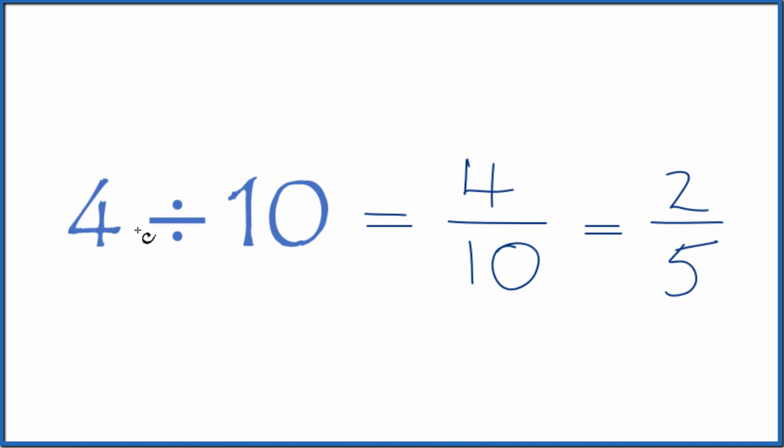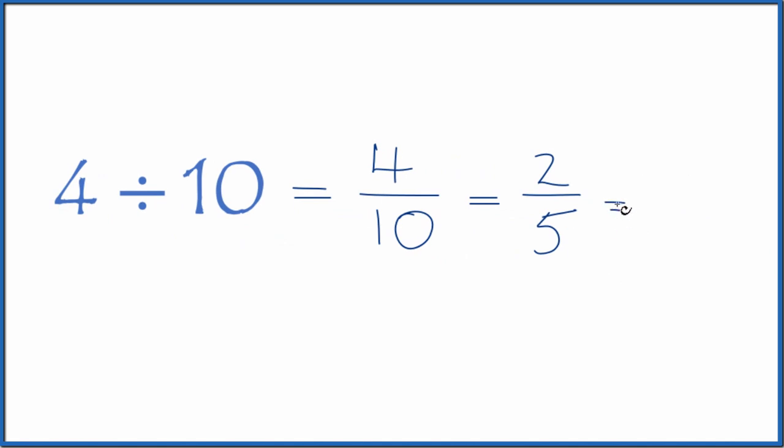You could also divide 4 by 10 on a calculator, or you could divide 2 by 5. Either way, you're going to get 0.4. So 4 divided by 10 equals the decimal 0.4.